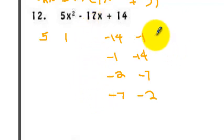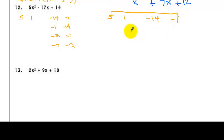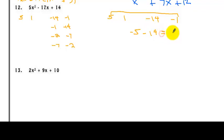Let's pair (5, 1) with (−14, −1). Outer: 5 times −1 is −5. Inner: 1 times −14 is −14. Adding these gives −19. I need −17, so this combination does not work.